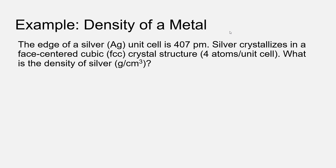Based on x-ray measurements, the edge of the silver metal unit cell is 407 picometers. Silver crystallizes into a face-centered cubic (FCC) crystal structure, which means there are four atoms in the unit cell. We'd like to calculate the density of silver in grams per centimeter cubed and see if it agrees with the known density of silver — around 10.6 grams per centimeter cubed as found in a reference table.